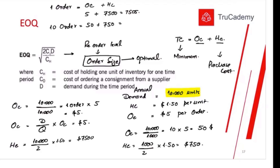Instead of one order, if I place 10 orders, my ordering cost will be $50 and my holding cost will only be $750 — total inventory-related cost is $800. See the big difference: placing one order results in $7,505 for the whole year, but placing 10 orders results in only $800. But I still don't know whether 10 orders is the optimal level or not.